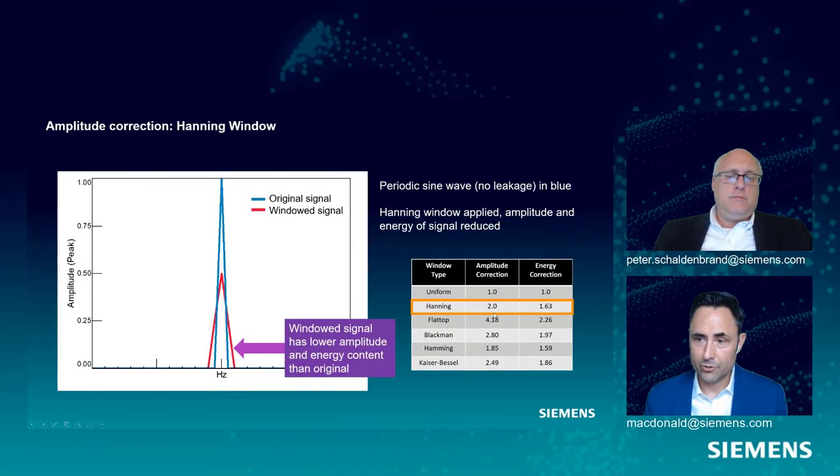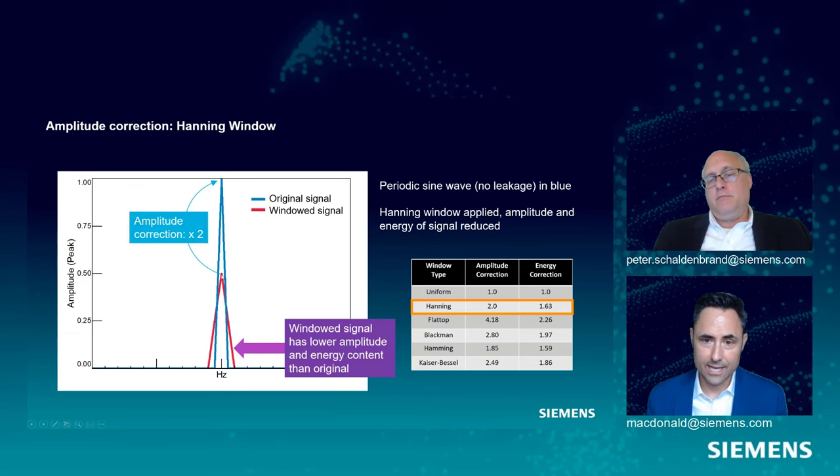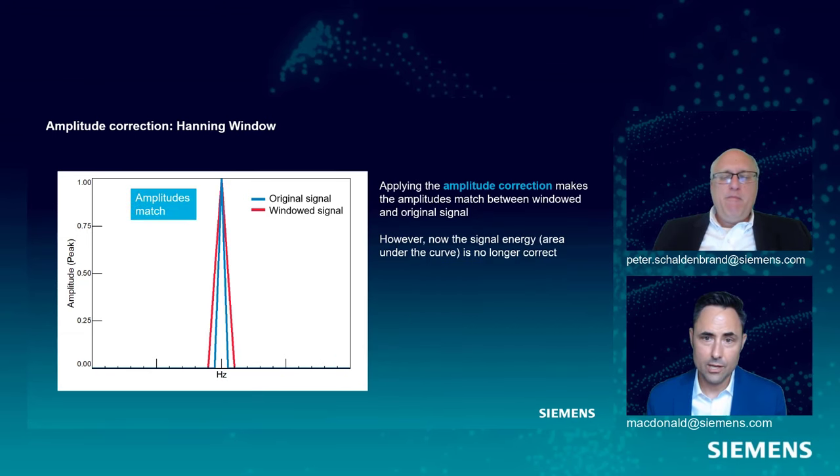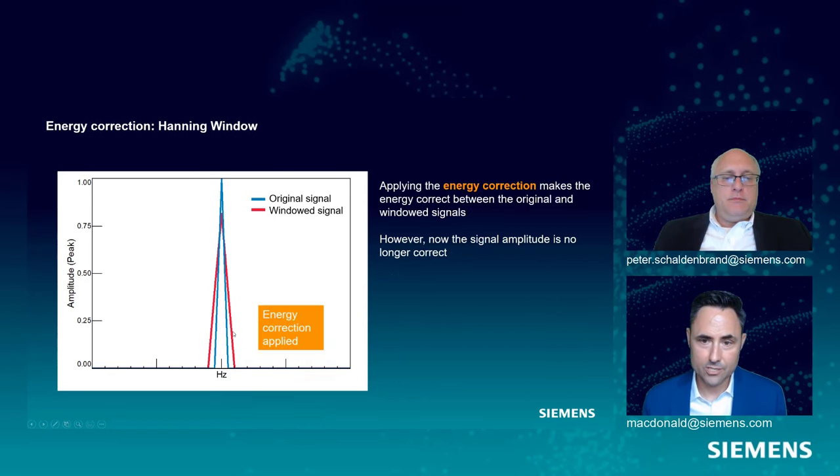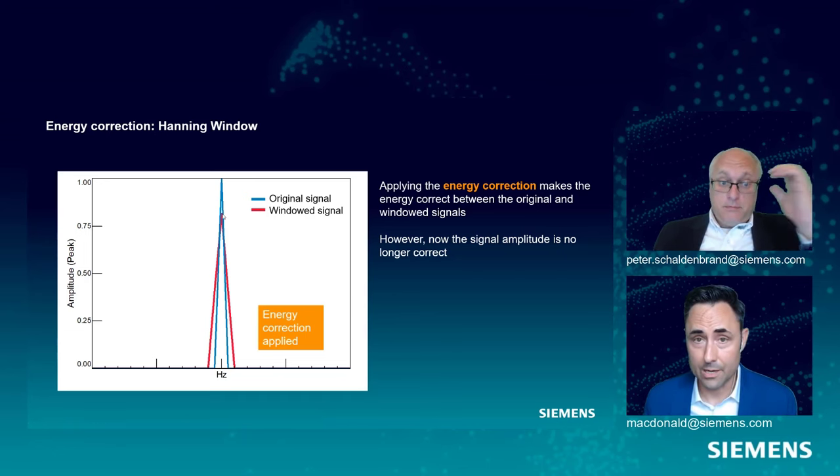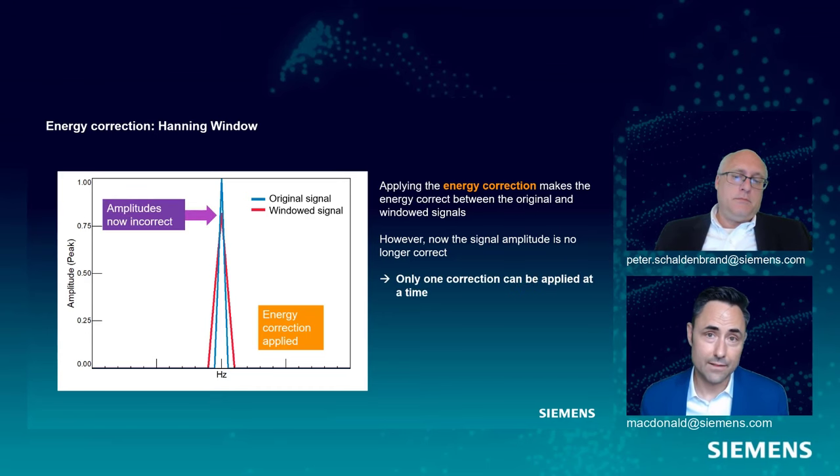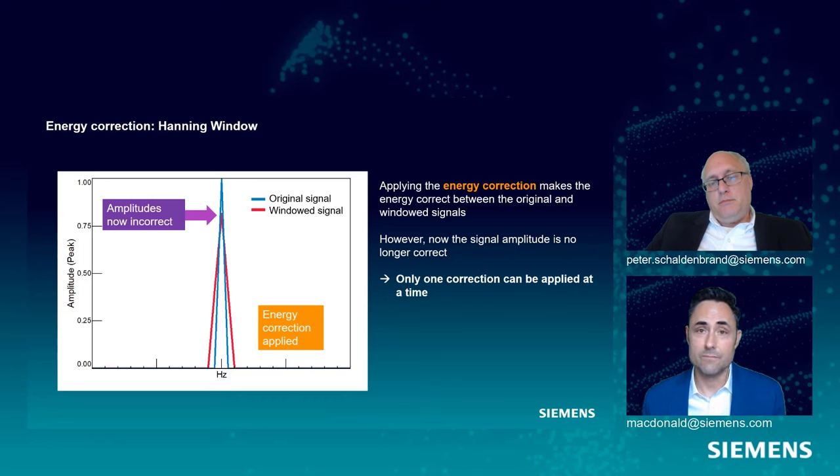The nice thing about these windows is the amplitude correction and the energy correction are known values because we knew what the window functions were going in. We can calculate the effects on amplitude and energy, and so we can counteract that. So for our Hanning window example, we see our amplitude correction is 2, so you see our amplitude is exactly half. So if I want to correct for that, I just multiply my amplitude by 2, and boom, I've got my amplitude perfectly corrected. You'll notice my energy is still not quite exactly right. It should be looking like the blue, so now let's do an energy correction. Energy correction is 1.63, and so I can correct for the energy as well. So here the energy or the area under the blue curve is identical to the area under the red curve. You see I had to bring this amplitude down a little bit in order to correct that energy error. The only bad thing about window corrections is that they cannot be both applied at the same time. We can correct either the amplitude or the energy, and it's really left up to us as an engineer or the tester to make this decision and apply one of these corrections.